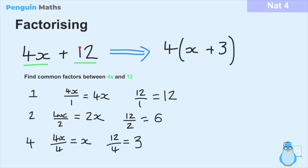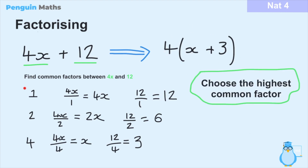Once we've found the common factors, how do we get the expression into bracket form? We have to choose one of the common factors, and the way we decide is to always go with the highest common factor. In the case of 1, 2, and 4, the number 4 is the largest, so it's the highest common factor. The common factor goes outside the bracket, and the answers to what we divided by the common factor go inside the bracket. So 4 is outside the bracket, and x and 3 are the numbers inside the bracket.